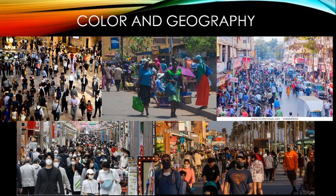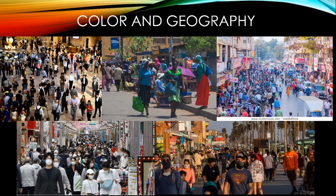Color choices also depend heavily on geography. Looking at street photography from around the world shows very different color palettes. In Times Square, New York and in Tokyo — cities half a world apart — you see a very similar approach: mostly black, then white, then blue from jeans, grays, and other neutrals, with color only appearing rarely.